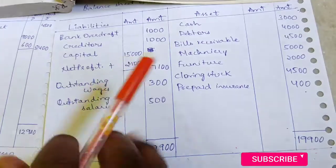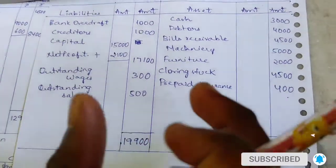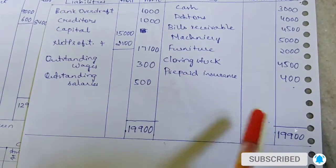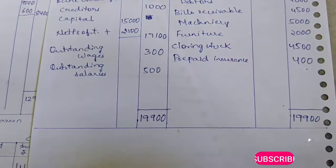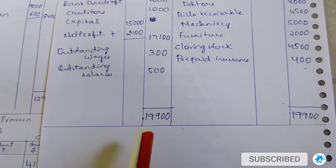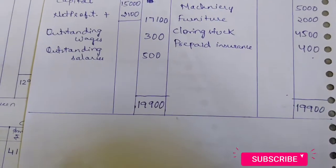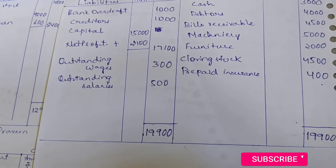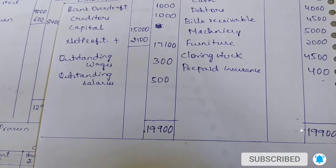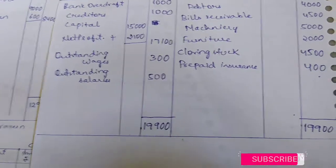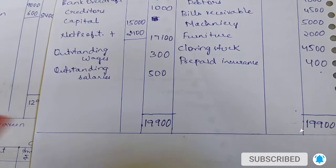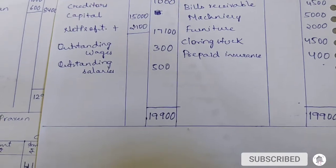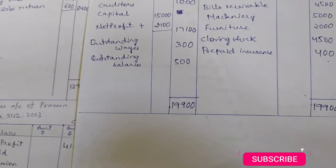Now the balance sheet total: liability side should equal asset side. The total comes to 19,900 on both sides. This is a simple sum of the type you will get in exams. Remember: adjustments are very important. If an adjustment causes an addition, it goes to the liability side; if it causes a deduction, it goes to the asset side. Thanks for watching and don't forget to subscribe our channel for more videos.